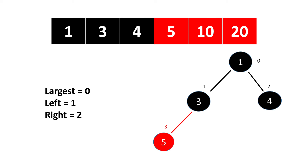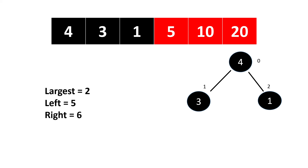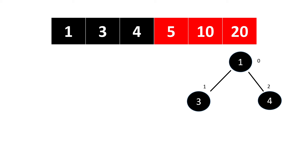We replace and reduce the size by one. Largest becomes index zero, left becomes index one, right becomes index two. The element at index one is greater than at index zero — three is greater than one — so largest becomes index one. The element at index two, four, is greater than the element at index one, three, so largest becomes index two. We do swapping between the largest element and the parent, and the max heap is generated.